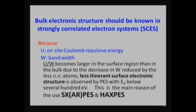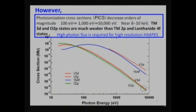There is a difficulty in hard X-ray photoemission: the photoionization cross-section. On a logarithmic scale, the photoionization cross-section goes down five orders of magnitude from 100 eV to 10,000 eV. So HAXPES is more than 1,000 times more difficult than conventional photoelectron spectroscopy, as far as you want comparable energy resolution.